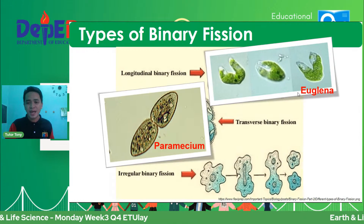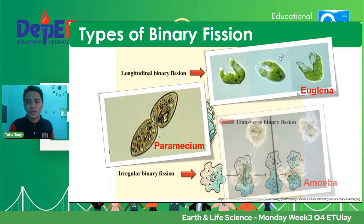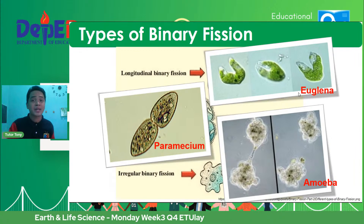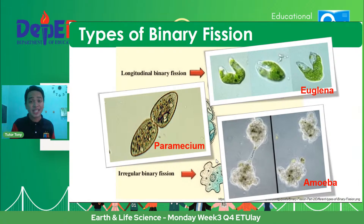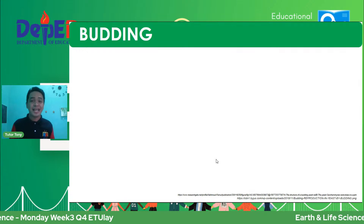Amoeba is the organism behind amoebiasis, found in unclean water. Since amoeba has an irregular shape, any axis of separation is possible. So we have longitudinal, transverse, and irregular binary fission — depending on where the organism separates to produce a new organism.